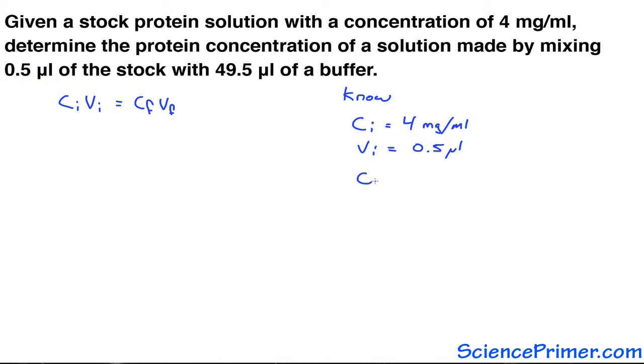The final concentration, Cf, is the unknown. The final volume is the total volume after the half a microliter of the original solution is mixed with 49.5 microliters of buffer.